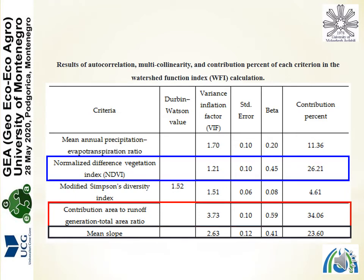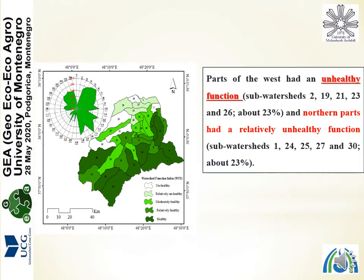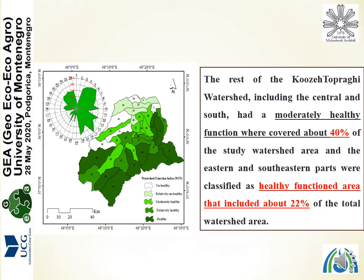The third factor is mean slope with a value of 23.60%. The core of the basin had an unhealthy function covering about 23% of the watershed. The northern part had a relatively unhealthy function, formed by sub-watersheds 1, 24, 25, 27, and 30. The central and southern parts of the Cusatoprogli watershed had a moderately healthy function, covering about 40%. The eastern, southern, and southeastern parts were classified as healthy function areas, comprising about 22% of the whole study watershed.